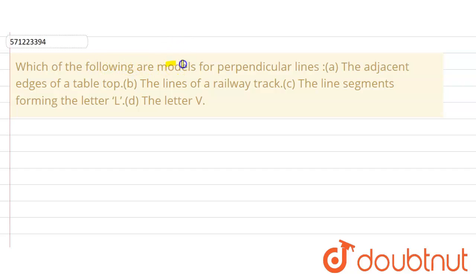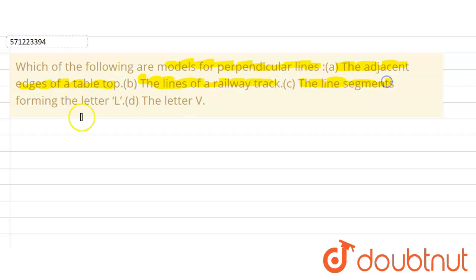Hello everyone. The question is: which of the following are models for perpendicular lines? Part A: the adjacent edges of a table top. Part B: the lines of a railway track. Part C: the line segments forming the letter L. And Part D: the letter V.